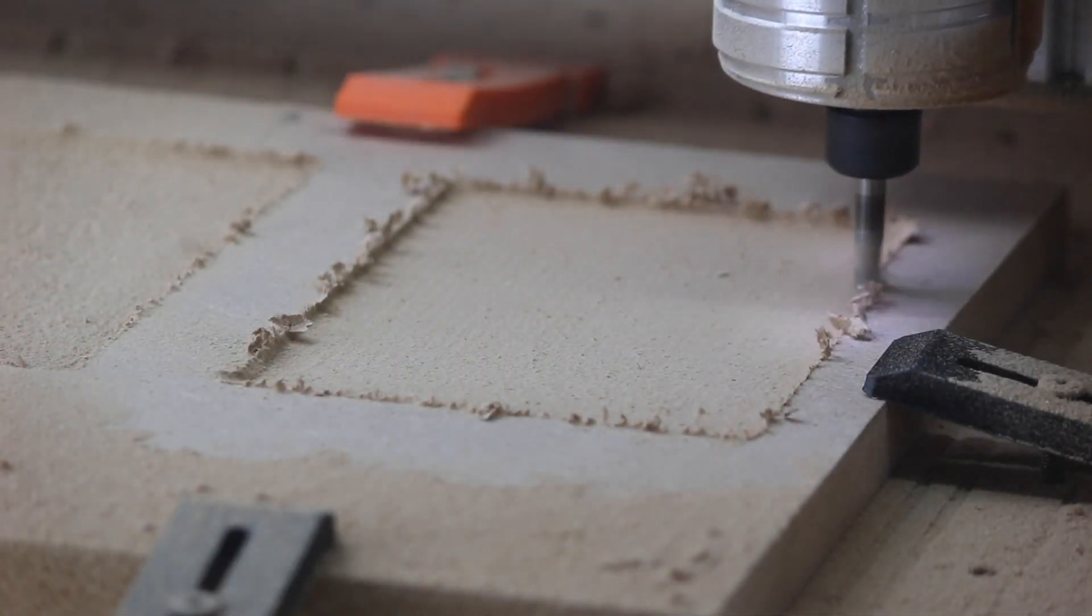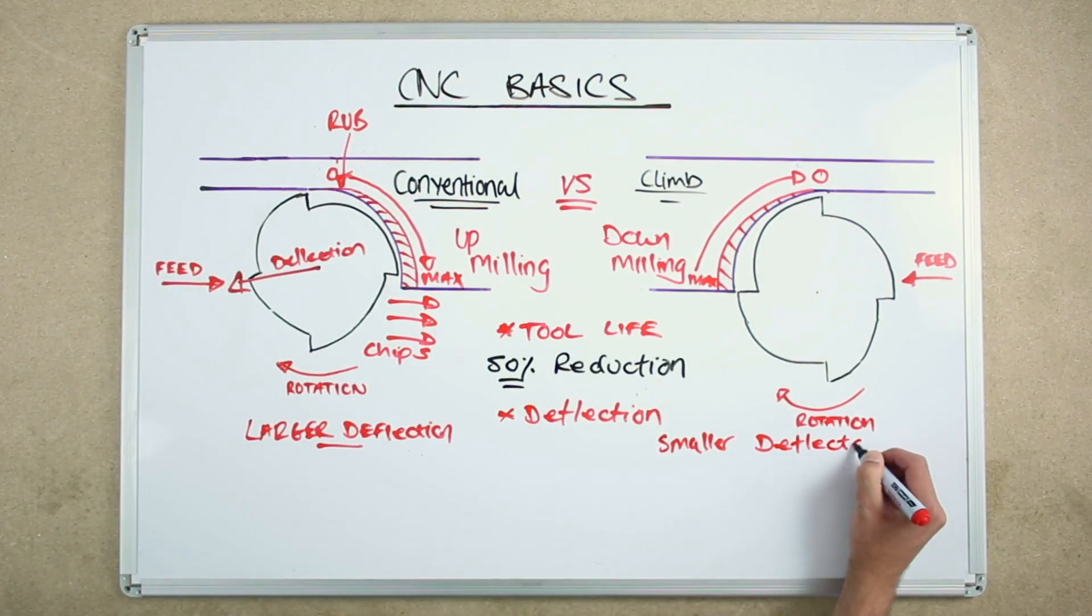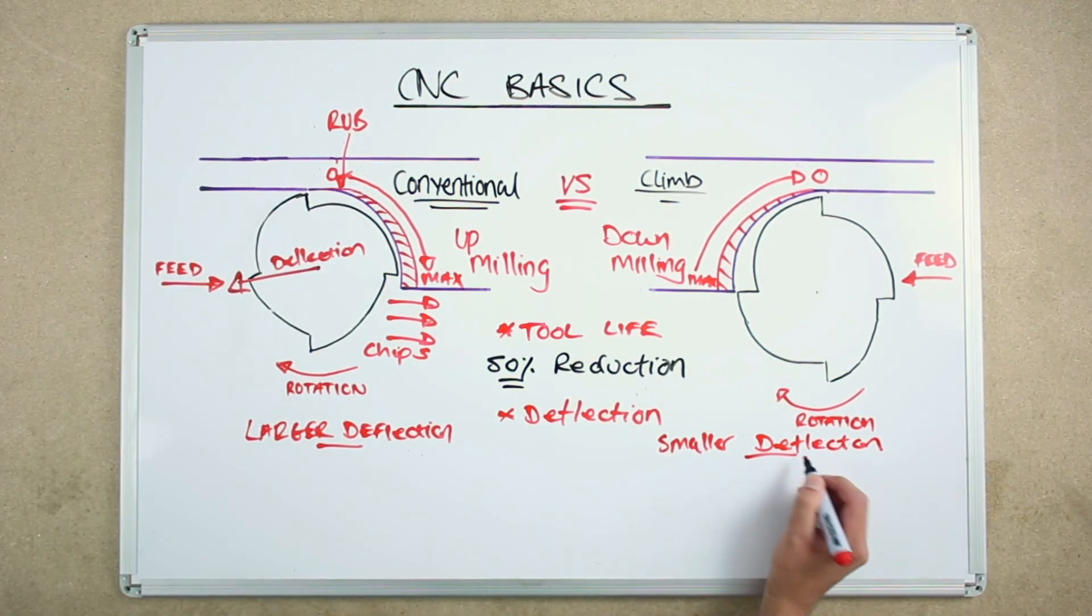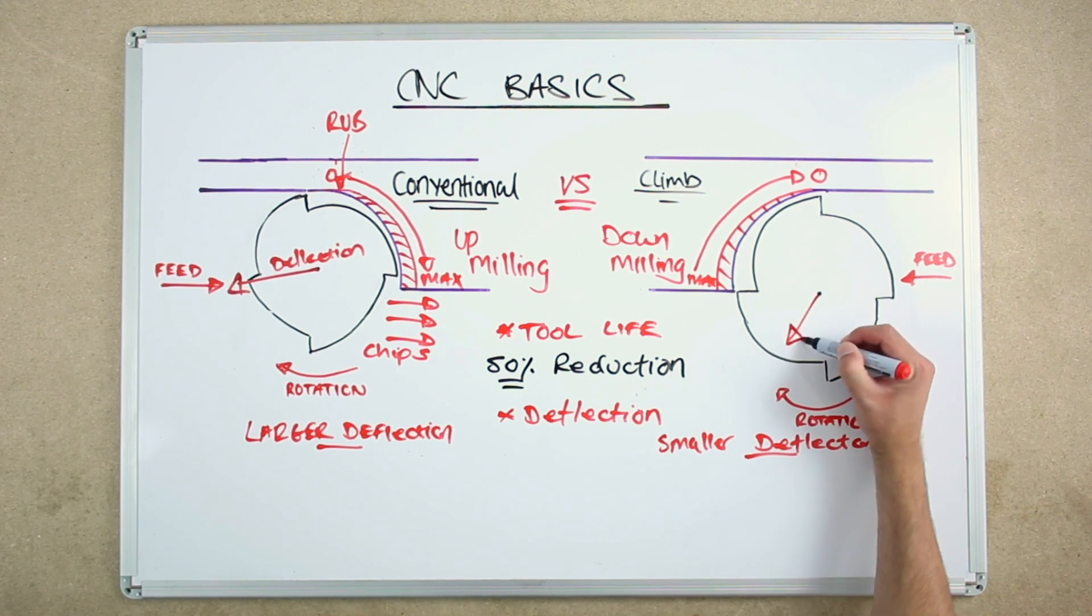Climb milling deflection is smaller than conventional, but because of the way the chips are cut, it's perpendicular to the direction of cut, so it can affect part geometry.